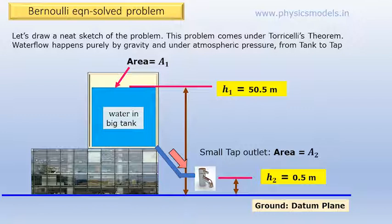The blue line is the datum plane. We call this height as H1 and area of cross section of that water tank as A1.